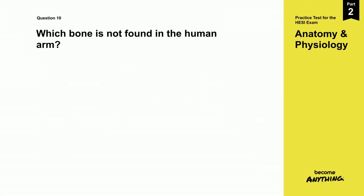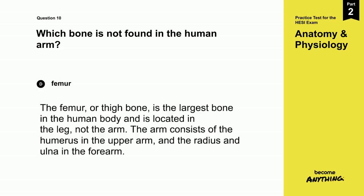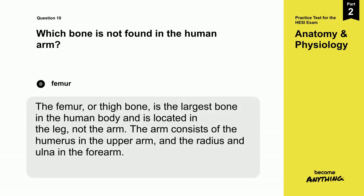The correct answer is D. Femur. The femur, or thigh bone, is the largest bone in the human body and is located in the leg, not the arm. The arm consists of the humerus in the upper arm and the radius and ulna in the forearm.